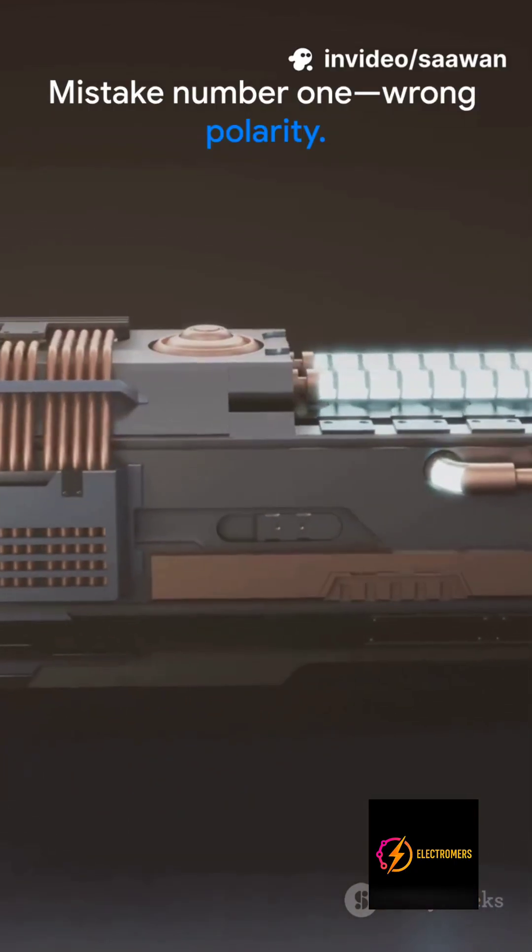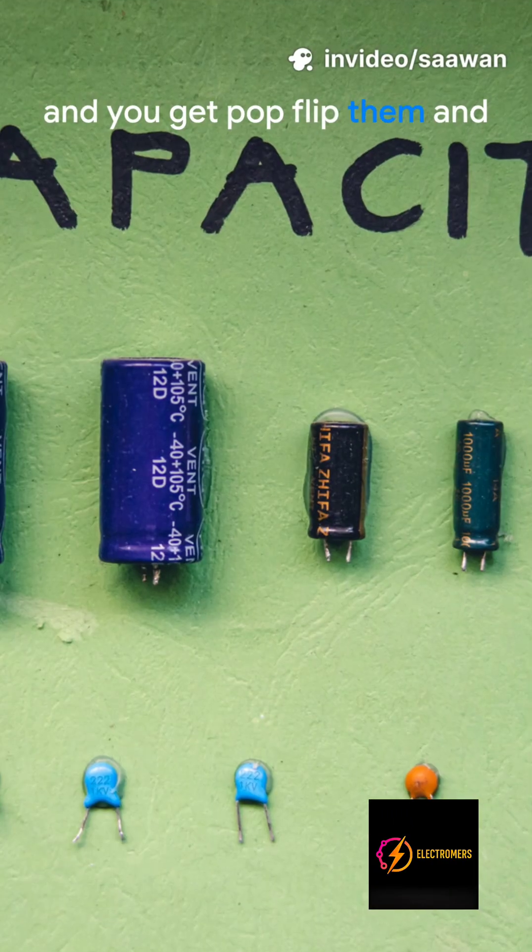Mistake number one: wrong polarity. Electrolytic caps and diodes have a direction. Flip them and you get pop, flip them and you get leak, flip them and you get no signal.